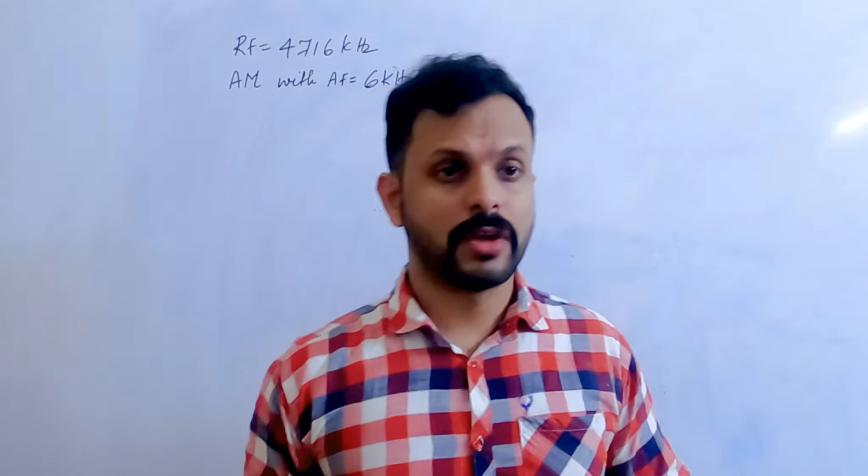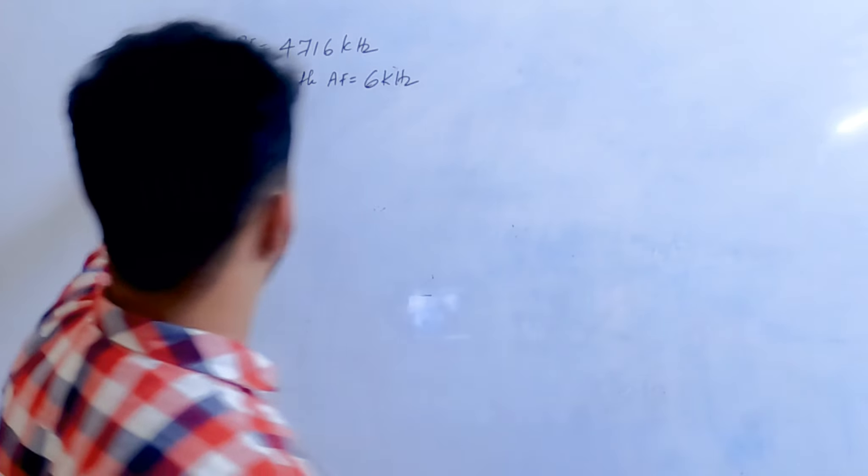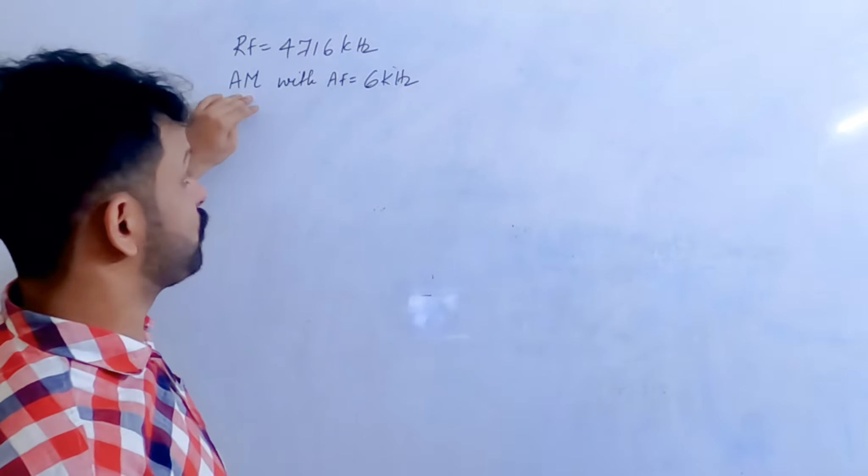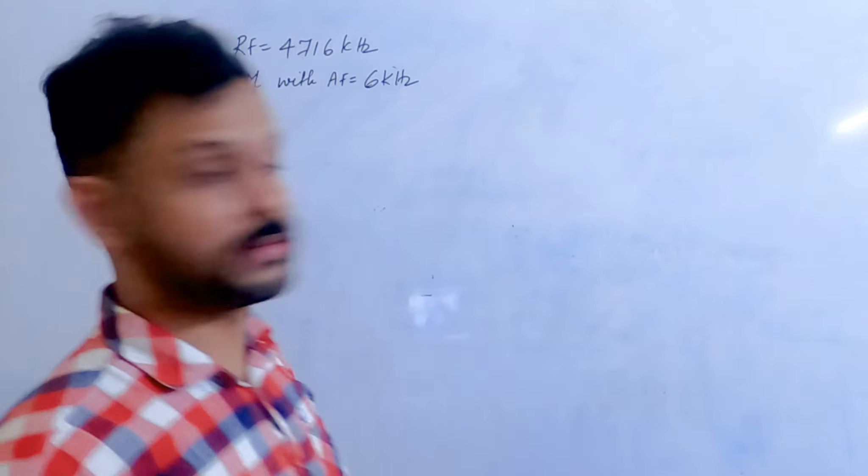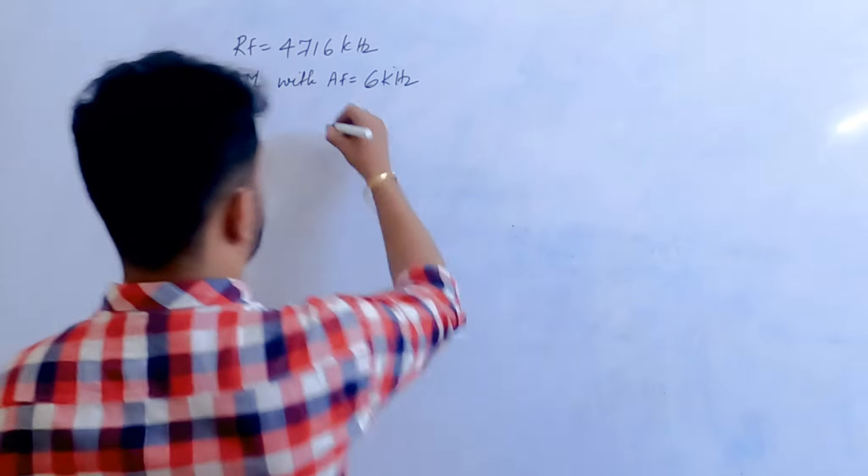The bandwidth produced when a radio frequency of 4716 kHz is amplitude modulated with an audio frequency of 6 kHz. You can copy these options down.